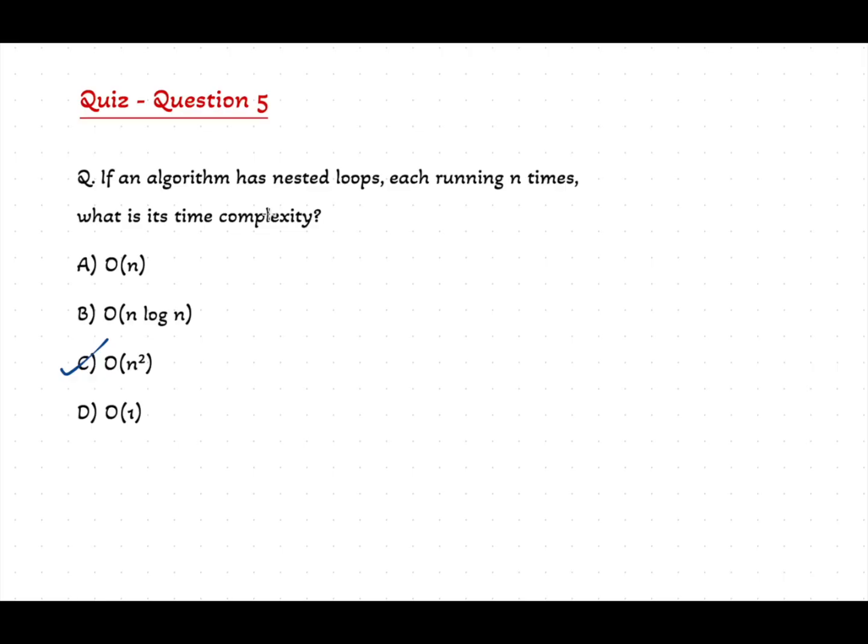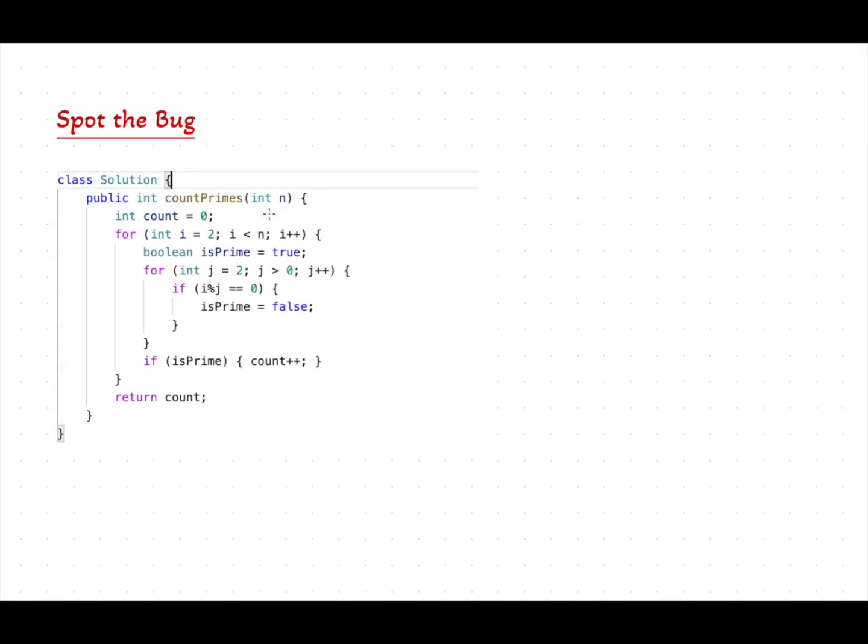Let's see the final segment, spot the bug. This code is supposed to run with O(n²) complexity as it has nested loops, but it runs infinitely. Can you spot the bug? Share your answer in the comments. Let's see who gets it. If you found this video helpful, please like, subscribe, and hit the bell so you won't miss our upcoming videos. Leave your thoughts or questions in the comments. Your feedback motivates us to create even better content. Thanks for watching and happy coding.